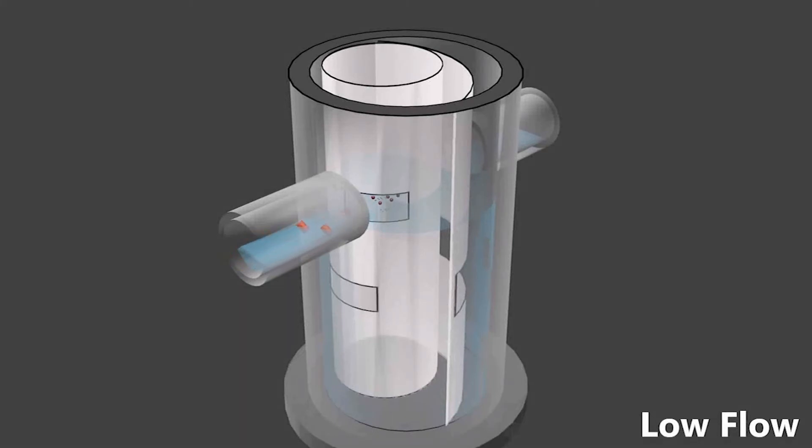During low flows, solids and floatables are pushed into the inner chamber and swirl around, creating a vortex motion that pushes the solids towards the center of the inner chamber.